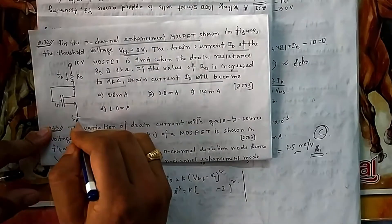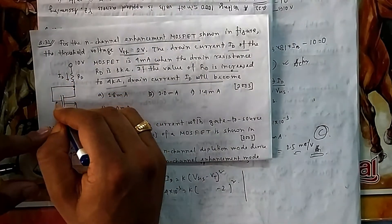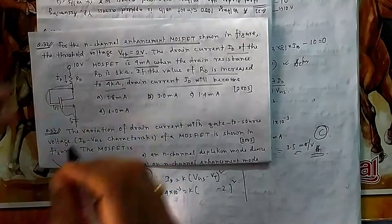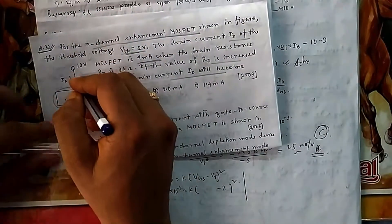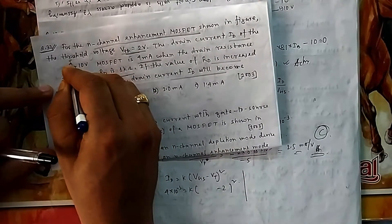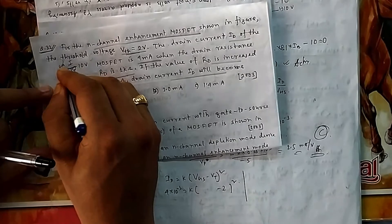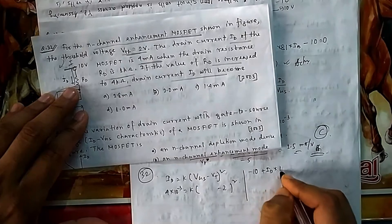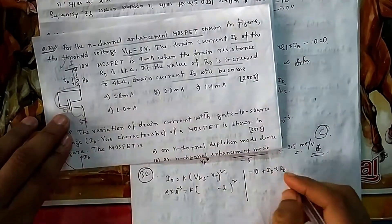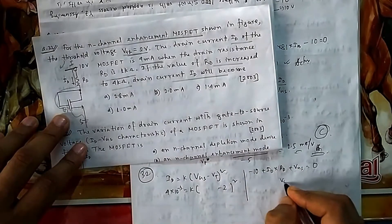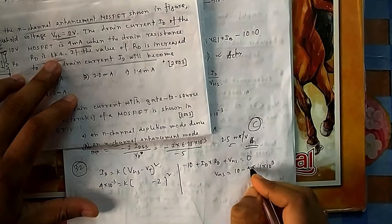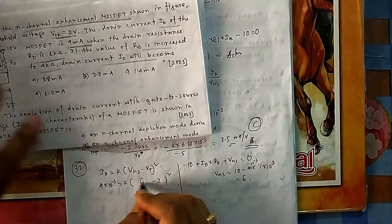Substituting I_D = 4 mA and R_D = 1 kΩ: V_GS = 10 − (4×10⁻³ × 1×10³) = 10 − 4 = 6 V. With V_GS = 6 V known, substituting into I_D = k(V_GS − V_T)² gives k = 2.5×10⁻³.